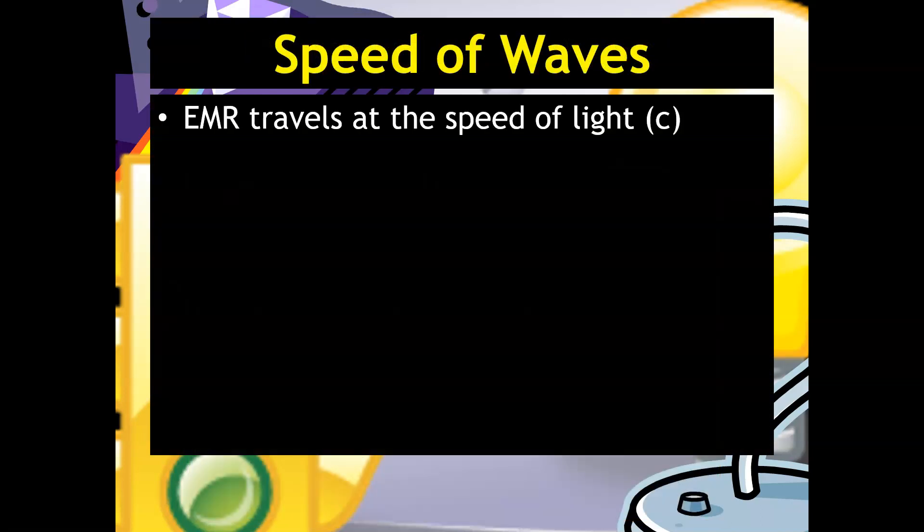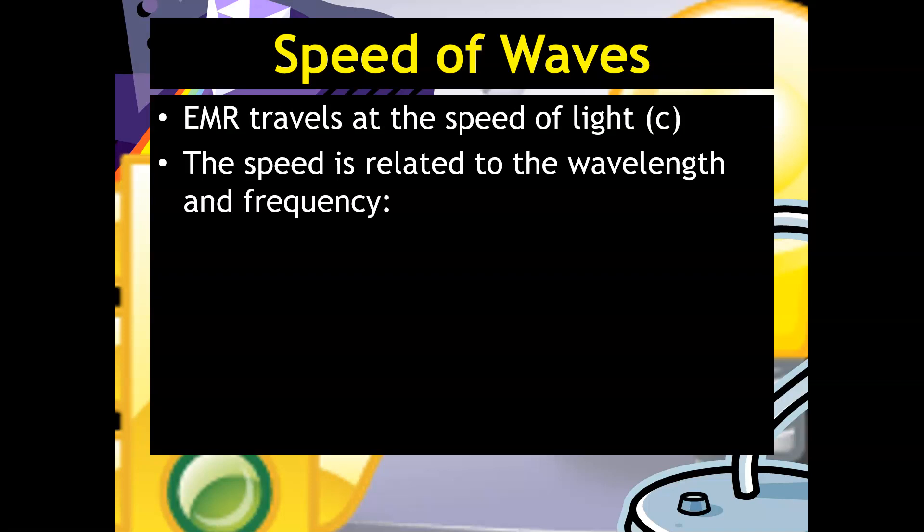In terms of the speed of waves, we say that electromagnetic radiation travels at the same speed, all of it. As long as it's traveling through a vacuum, this is going to travel at the speed of light. C, the speed is related to the wavelength and frequency, although you might have already recognized that. So notice that there is an inverse relationship between the wavelength and the frequency.